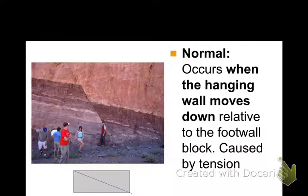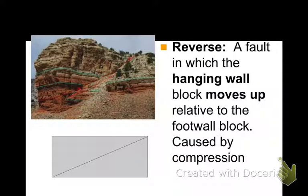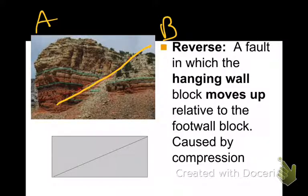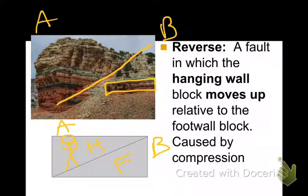Let's look at the next one, which is reverse — it's going to be the opposite. Here's the fault, already outlined in red. Think in your head: which one is hanging, which one is foot? Side A is the hanging wall. In a reverse fault, the hanging wall appears to have moved up. There's a section of rock outlined in green, and this side appears to have moved up — so therefore it would be a reverse fault.